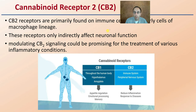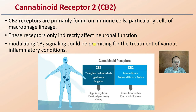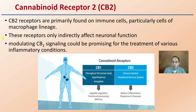CB2 receptors are probably found on immune cells, particularly cells of macrophage lineage, and relate to your body's immune system. These receptors only indirectly affect neurological functions. Modulating CB2 signaling could be promising for the treatment of various inflammatory conditions — because CB2 receptors are peripheral nervous system and immune system receptors, they can potentially reduce inflammation in response to diseases like rheumatoid arthritis.